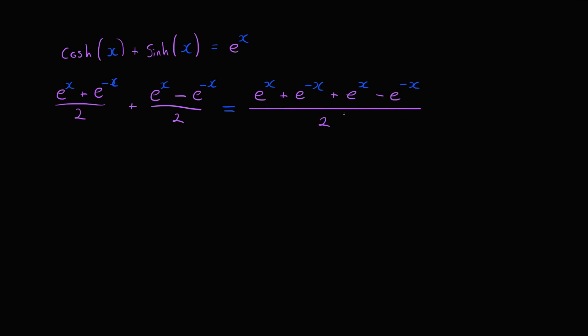Notice that we have e to the x plus another e to the x. This gets us 2 e to the x. We have a plus e to the minus x and a minus e to the minus x. These cancel out to give us zero, and of course these twos cancel out. And this is what we wanted to prove. QED.